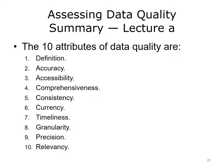In summary, data used for research purposes is collected under different conditions than that used for quality improvement. Poor quality data contributes to error. The ten attributes of data quality are: Definition, Accuracy, Accessibility, Comprehensiveness, Consistency, Currency, Timeliness, Granularity, Precision, and Relevancy.